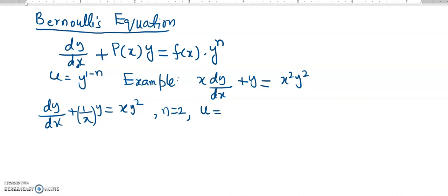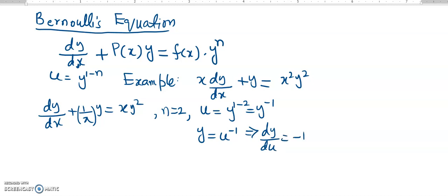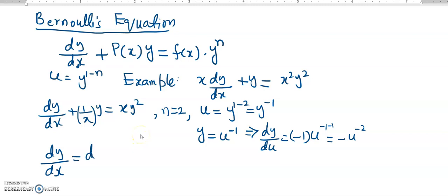We apply the substitution u equals y to the power of 1 minus 2, which is y to the power of minus 1. So if u equals y to the power of minus 1, then y equals u to the power of minus 1, and dy over du equals minus u to the power of minus 2. By the chain rule, dy over dx equals dy over du times du over dx.